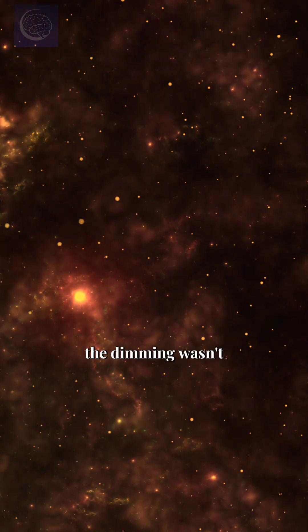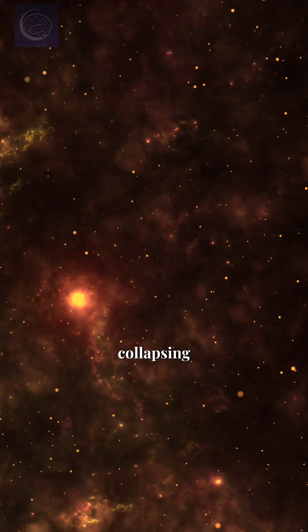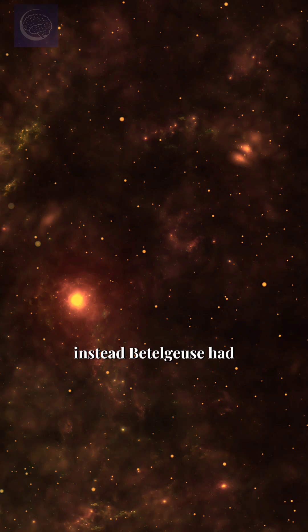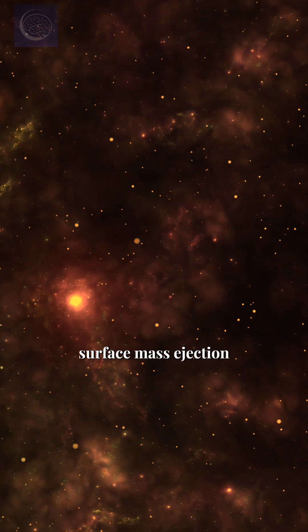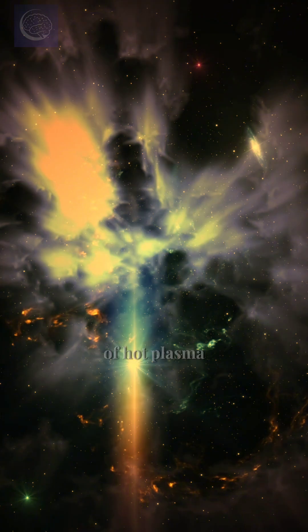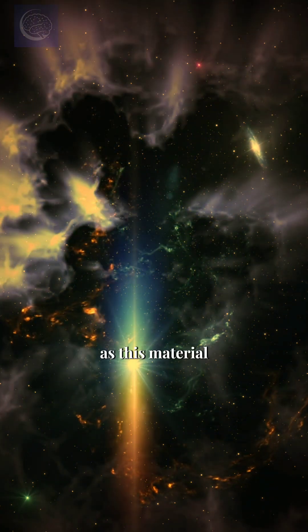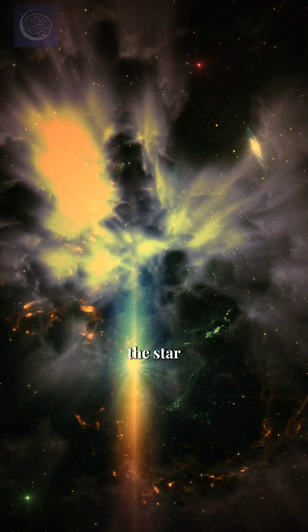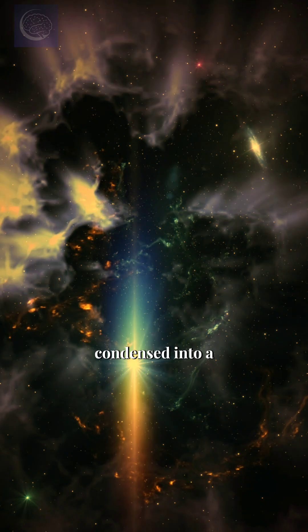The dimming wasn't the star's core collapsing. Instead, Betelgeuse had suffered a massive surface mass ejection, literally blowing off a huge bubble of hot plasma. As this material moved away from the star, it cooled and condensed into a large dust cloud, temporarily blocking our view.